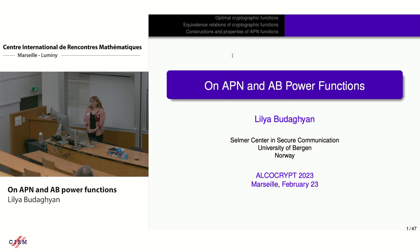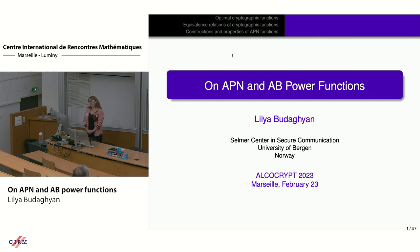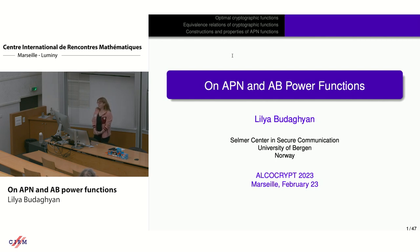My talk is on APN and AB power functions. They are cryptographic functions with optimal resistance to linear and differential cryptanalysis, which are two main cryptographic attacks on block ciphers. I will concentrate a little bit more on the case of power functions, because there are several big open problems which have been open for a couple of decades.